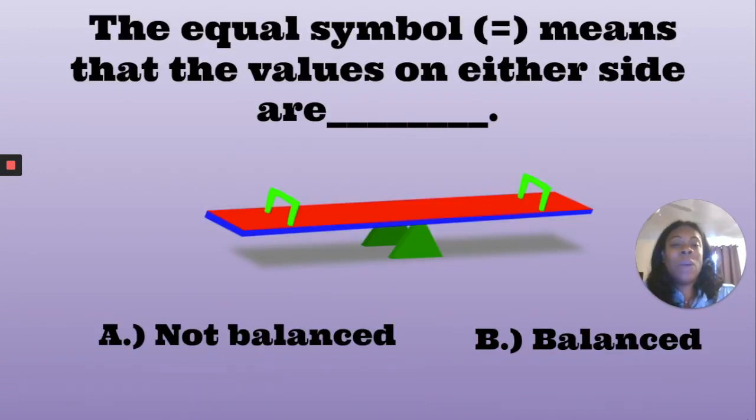Number two, the equal symbol means that the values on either side are balanced. Your answer should have been B.